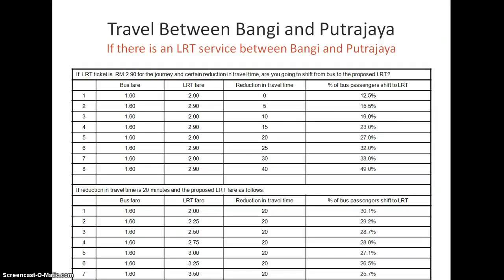For example, this is data collected for LRT service between Bank and Putrajaya — the LRT was not yet built. We asked people: if there were an LRT between Bank and Putrajaya, are you willing to use it? We asked bus users: if the bus fare is 1.60 ringgit and the LRT fare is 2.90 ringgit with the same travel time, only 12% of bus users would use the LRT.